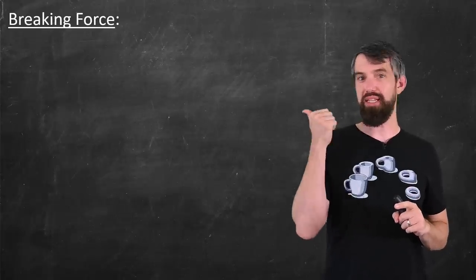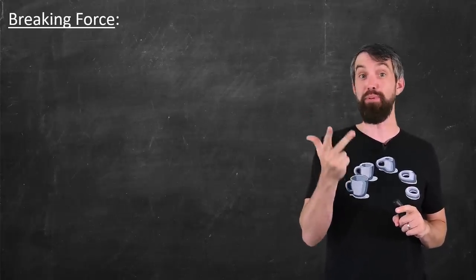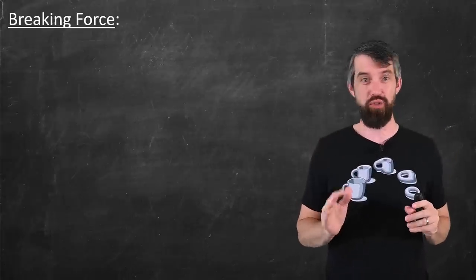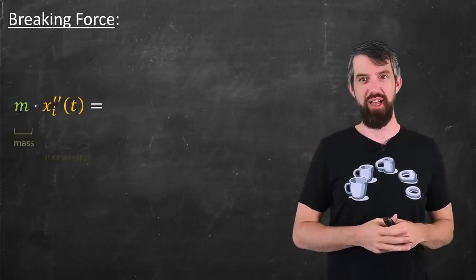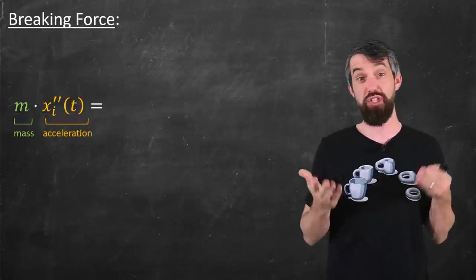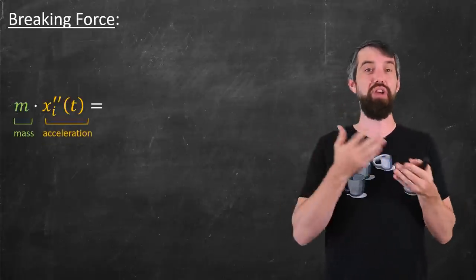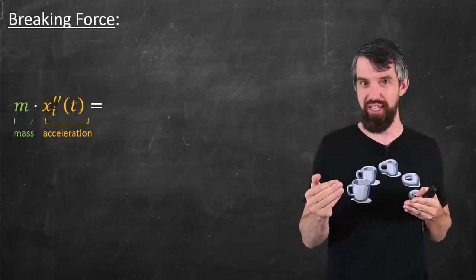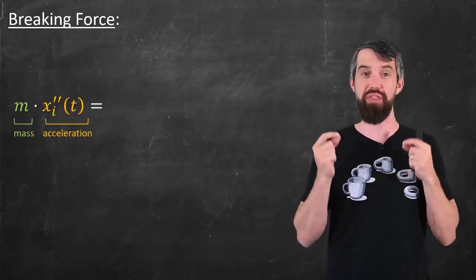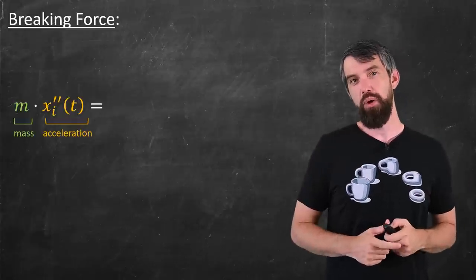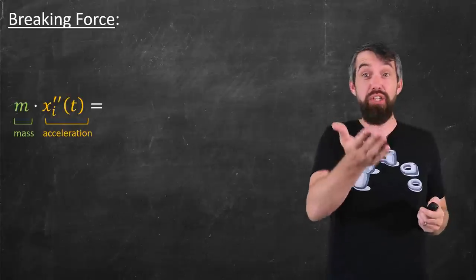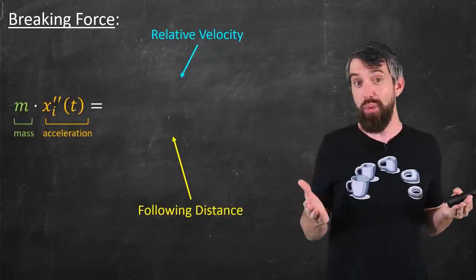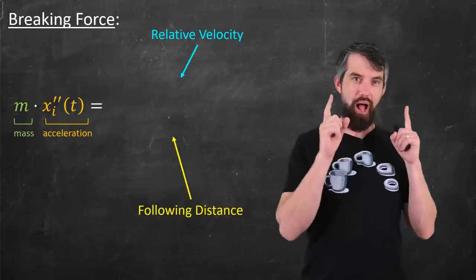Now that I know what my problem is, the types of things I'm going to consider, and some simplifying assumptions, I'm ready to write down what my actual model is. So I'm trying to describe a force, a braking force, which by Newton's law is mass times acceleration. And so I'm going to write it as the mass of the car times the second derivative of x_i(t), x_i referring to the location of the front of the ith car. So what should this be equal to? Well, I know the factors I want to consider: following distance and relative velocity.